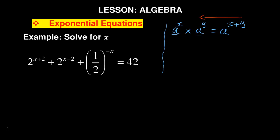Now if I write the same law from right to left, I have: a to the power of x plus y equals a to the power of x, times a to the power of y. So I can split a combined exponent into a product of separate exponents. This reverse reading of Law 1 is what I'm going to use in my equation.